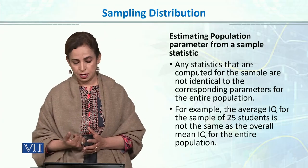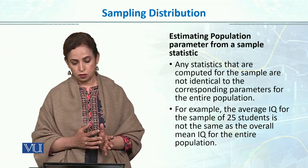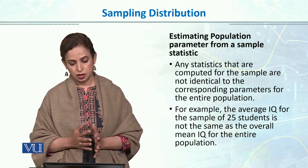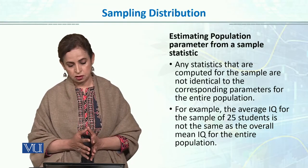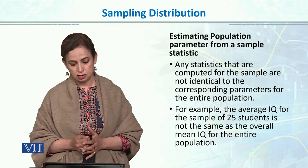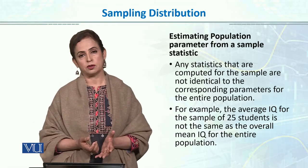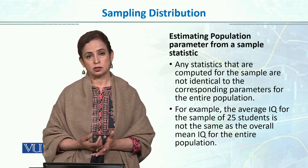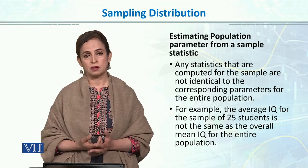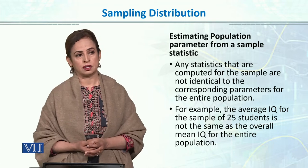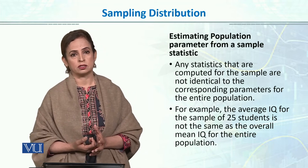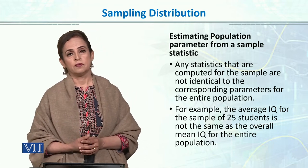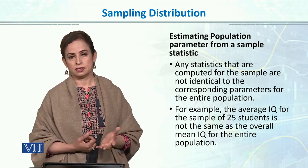For example, the average IQ for a sample of 25 students is not the same as the overall mean IQ of the entire population. If we want to study student population in Pakistan — say young adolescents in Lahore city — the population is well defined.